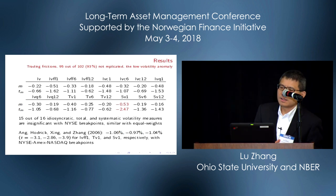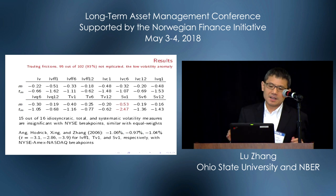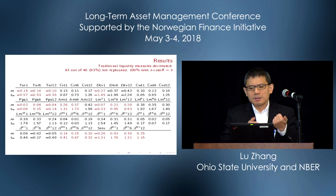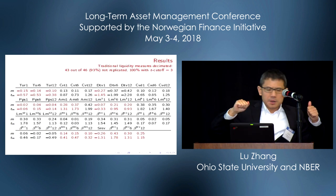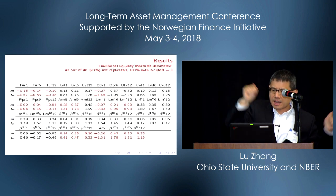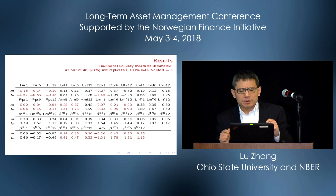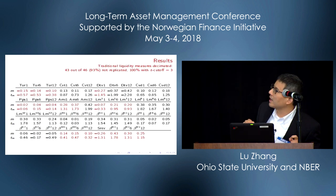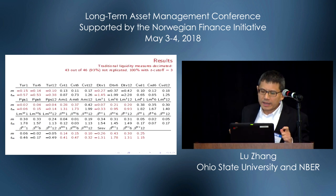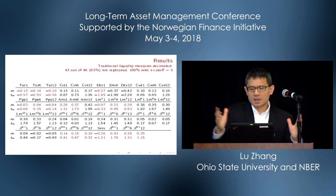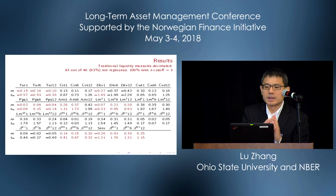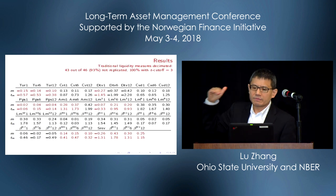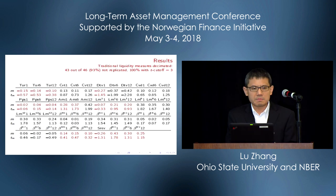Traditional liquidity variables — turnover, dollar trading volume, one-over-share-price, zero trading days, absolute return price impact, absolute return to volume, net debt, and even short-term reversal — give only 26 basis points per month with T-stat 1.93. Different versions of Chay-Peterson liquidity variables and liquidity betas are not replicated. Imposing T value of 3, 100% of liquidity betas fail to stand up. Most papers in this space use cross-sectional regressions or report only equal-weighted portfolio sorts, which overweight microcaps even more.